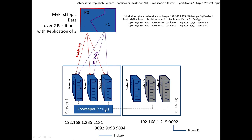On server 1, where the ZooKeeper also resides, we can see it's listening on port 2181. We can also see three brokers: broker 0 is on 9092, the second broker is on 9093, and broker 3 is on 9094. To find broker 21 we go on to server 2, and we find that server 2 has an IP address of 192.168.1.215. The port number that broker 21 is listening on is 9092.